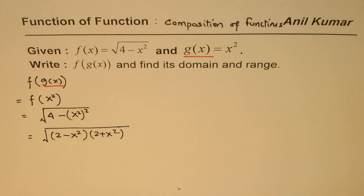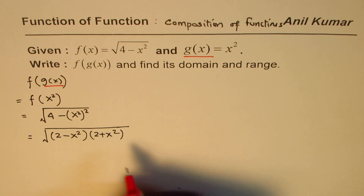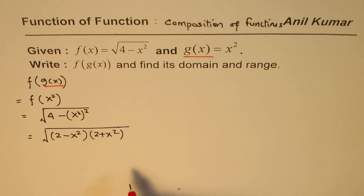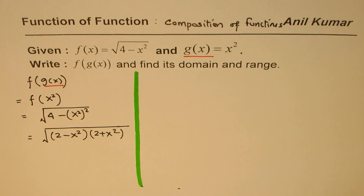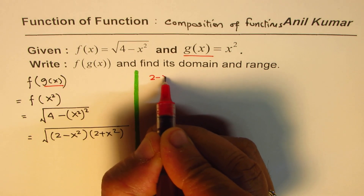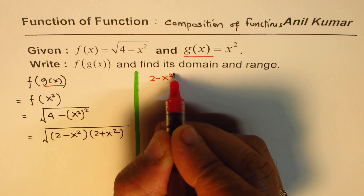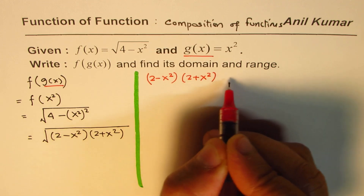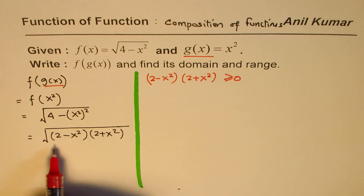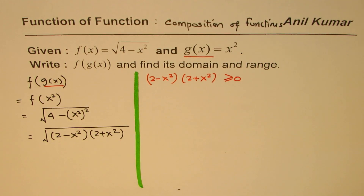To find the domain, the expression inside the square root must always be greater than or equal to zero. So we need (2 minus x squared) times (2 plus x squared) to be greater than or equal to zero.